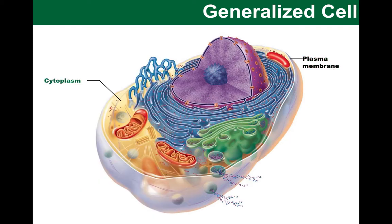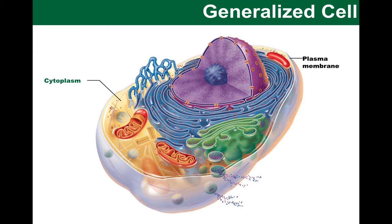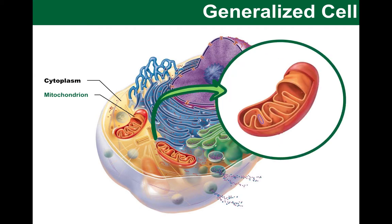Now let's talk about the cytoplasm — the cellular material located between the plasma membrane and the nucleus. You can see the yellowish cytosol in this diagram, which is the jelly-like solution made up of water and soluble molecules. We will be focusing on various cell organelles. First, mitochondria — often described as the power plant of the cell, because this is where the ATP energy molecules of the cell are produced. You should have looked at the process of cellular respiration earlier too.